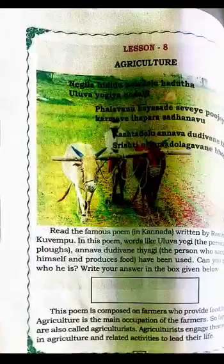A person who cultivates the field is known as a farmer. Agriculture is the main occupation of the farmer. Farmers are also called agriculturists. Agriculture and related activities lead their life. In this lesson, we learn about what agriculture is, the problems of agriculturists, and types of laborers in agriculture work.